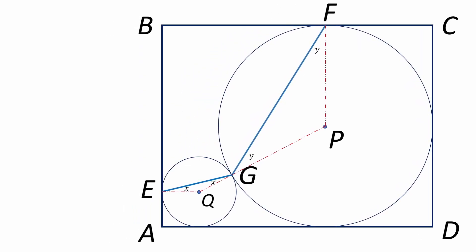Notice that points Q, G, and P are all collinear. So we can say that X plus Y plus alpha equal 180, since all three angles are supplementary.